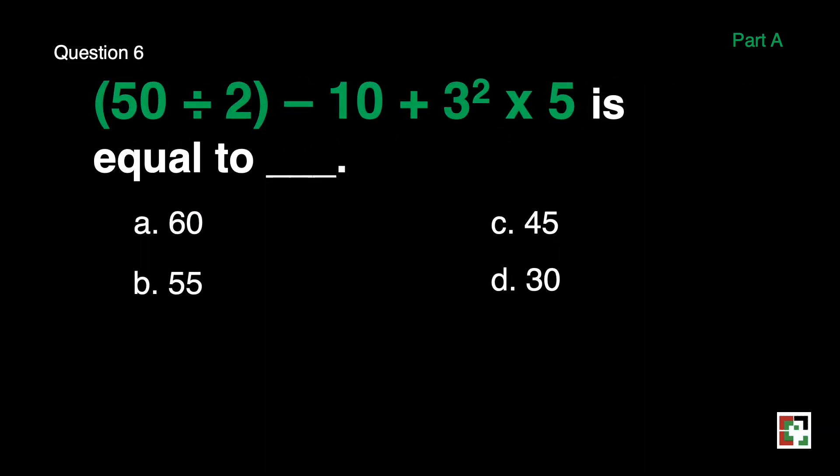Next question, question number 6. The quantity of 50 divided by 2 minus 10 plus 3 squared times 5 is equal to? A, 60, B, 55, C, 45, D, 30.